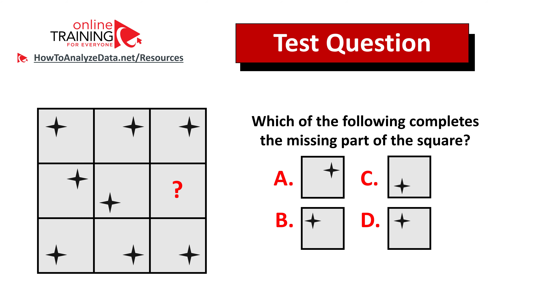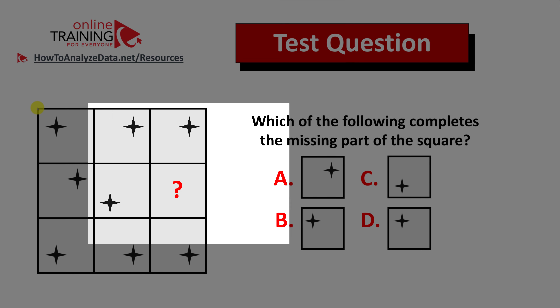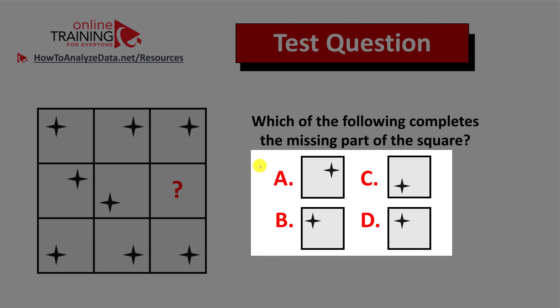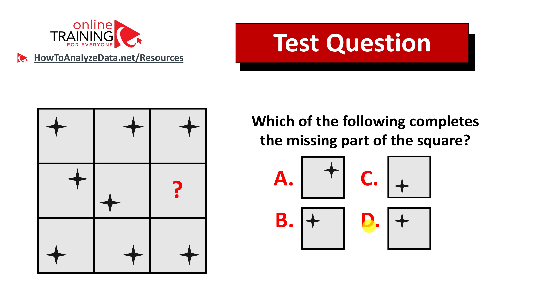Here's a tricky question from the test: which of the following completes the missing part of the square? You're presented with a three-by-three square consisting of smaller squares, each with a star in a different corner. One small square is missing, and you have four choices — A, B, C, and D — each with a star in a different corner. Give yourself 10 to 20 seconds to come up with the answer.